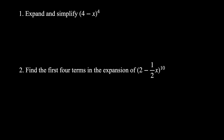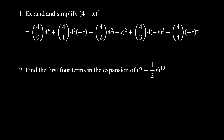The first two examples are pretty straightforward — your standard binomial theorem questions. The first one says expand and simplify (4 - x)^4. Using the binomial theorem, the five terms in this expansion will be: 4C0 · 4^4, plus 4C1 · 4^3 · (−x), plus 4C2 · 4^2 · (−x)^2, plus 4C3 · 4 · (−x)^3, plus 4C4 · (−x)^4.